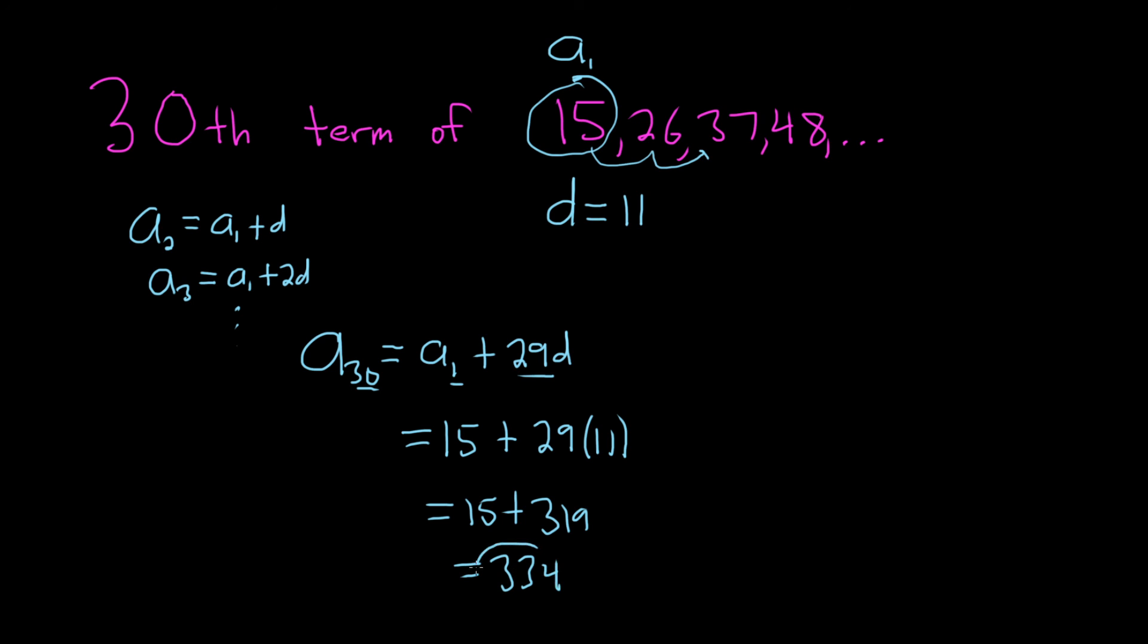So that would be the 30th term of this arithmetic sequence. Again, to find any term in an arithmetic sequence, just write it down. Write down a sub 1, and then you can just subtract. 30 minus 1 is 29. So if you had to find the 47th term, you would just do a sub 1 plus 46d.